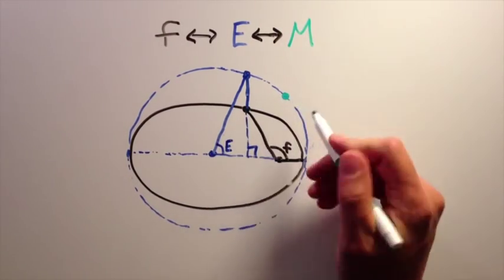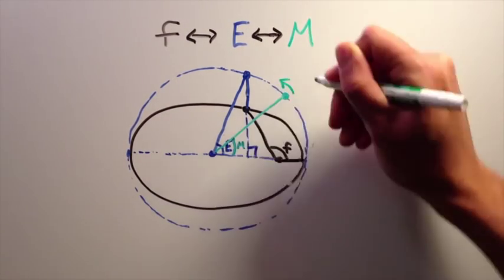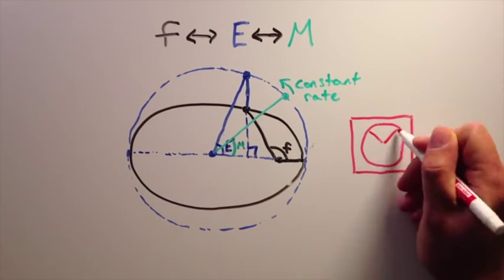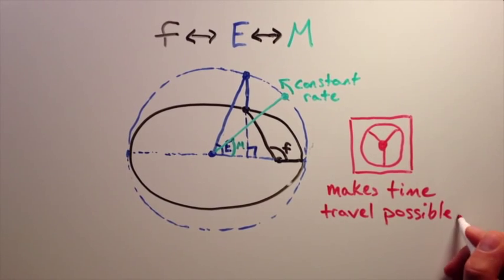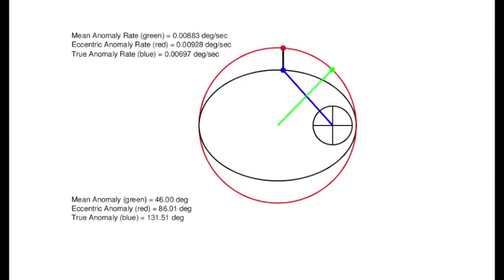The mean anomaly is off on its own moving around the auxiliary circle at a constant rate. It's also measured from the center of the auxiliary circle. Maybe we can throw in a flux capacitor and that will clear up the problem. Clear as mud, right? Okay, maybe a static picture isn't the best way of showing this. Hopefully this animation will help.